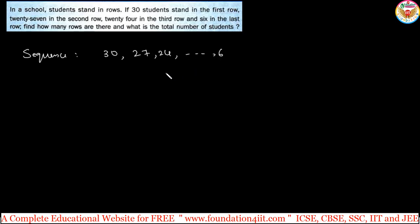The sequence formed by the number of students standing in different rows is: first row 30, then 27, 24, and so on. The last row is 6. Now, how many rows are there and what is the total number of students?